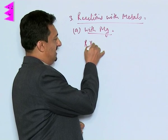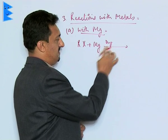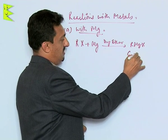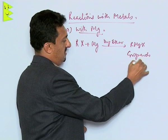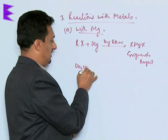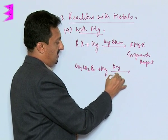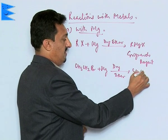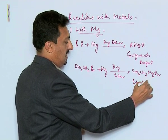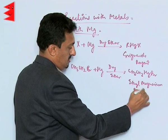When any alkyl halide is reacted with magnesium in dry ether, what we get is RMgX, which is called Grignard's reagent. The simplest example is when ethyl bromide is reacted with magnesium in dry ether — the product is ethyl magnesium bromide.